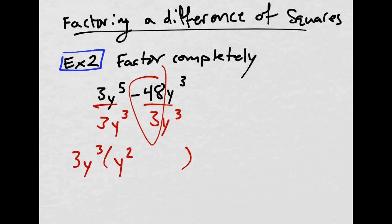And then negative 48 divided by 3, that's negative 16. And then y cubed divided by y cubed is just 1, but 16 times 1 is just 16.